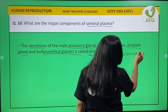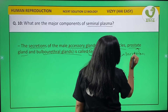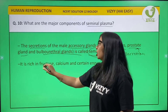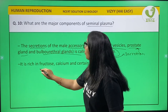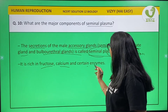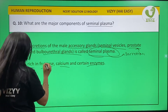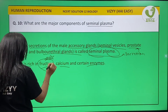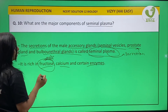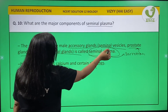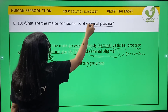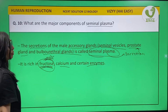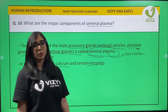Seminal plasma is rich in fructose, calcium, and certain enzymes. Notice that fructose is present and rich in this particular secretion — this is an important point from the perspective of MCQs.